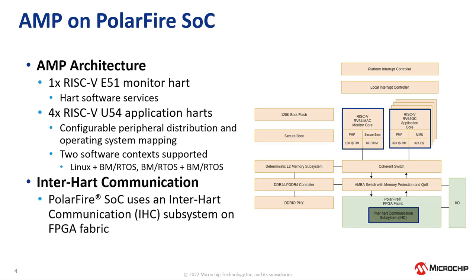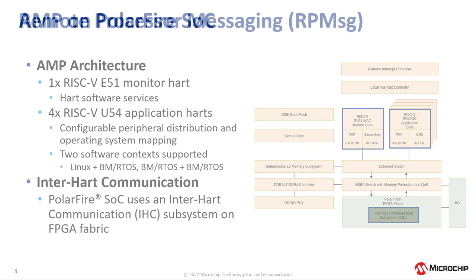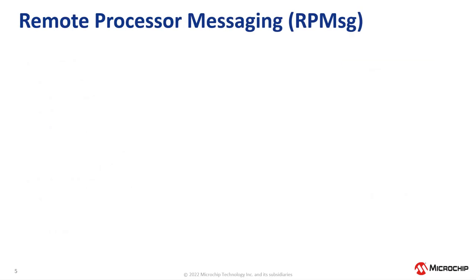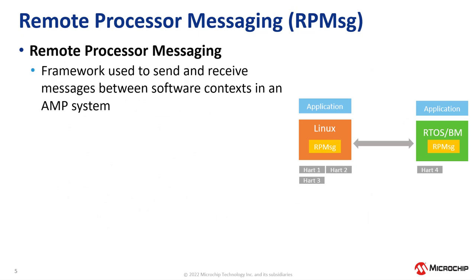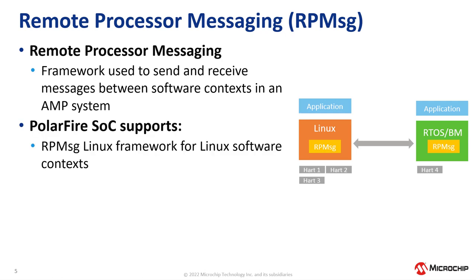In terms of inter-core communication, PolarFire SOC uses an inter-core communication subsystem available in the FPGA fabric. The multi-core software framework used by PolarFire SOC is the Remote Processor Messaging, or RPMessage Framework. This framework is used to send and receive messages between software contexts in an AMP system. PolarFire SOC supports the RPMessage Linux Framework for Linux-based software contexts and the RPMessage Lite Framework for real-time operating systems and bare-metal contexts.